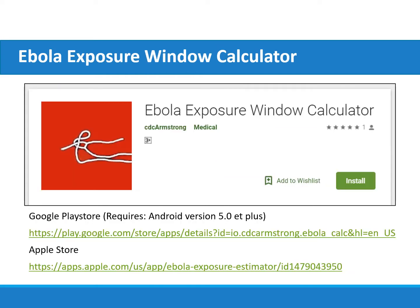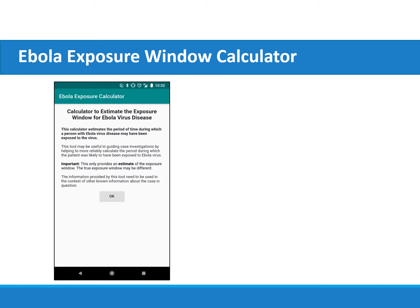The Ebola exposure calculator application was developed to help accurately calculate exposure windows to EVD in the field. The application was piloted during the peak of the 2018–2020 EVD outbreak in the Democratic Republic of the Congo, or DRC, and was used by local surveillance staff with minimal training due to its practical design.